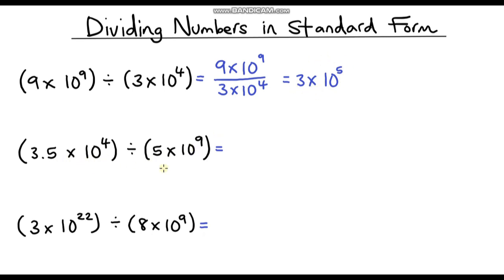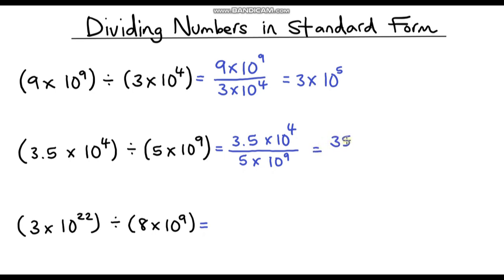The next example: 3.5 times 10 to the power 4 divided by 5 times 10 to the power 9. I'll rewrite this as a fraction. Looking at the single digit numbers, we've got 3.5 divided by 5, which is tricky. But I can see that 35 divided by 5 is 7, so I'm going to change 3.5 to 35 by multiplying it by 10.